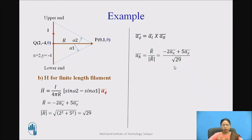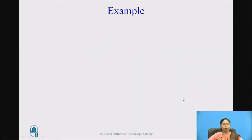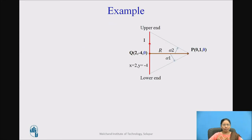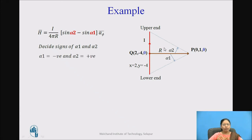We have already calculated R. Now determine A_phi bar: A_phi bar equals A_L bar cross A_R bar, where A_R bar equals R bar divided by modulus of R bar. Computing the cross products A_Z cross A_X and A_Z cross A_Y following the standard triangle rule, the result is minus 2 A_Y minus 5 A_X. Now decide the signs of α₁ and α₂: α₂ is positive because it is in the same direction as the current, and α₁ is negative because it is in the opposite direction of the current.